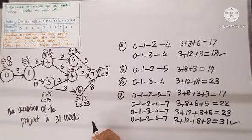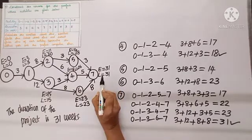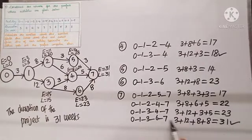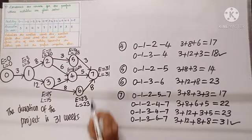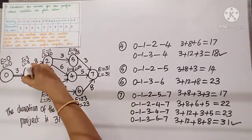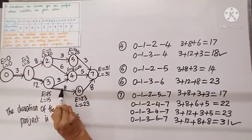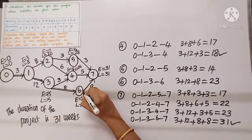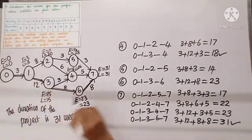The maximum duration of thirty-one was achieved via path zero to one, one to three, three to six, six to seven — that is the critical path. We draw double lines along zero-one, one-three, three-six, and six-seven to mark the critical path.